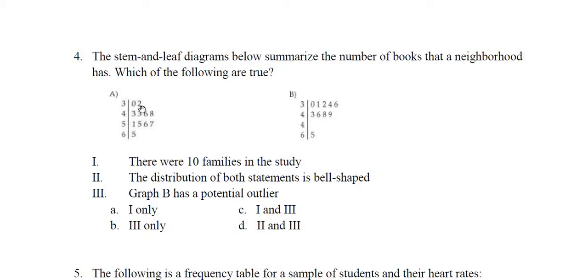Well, let's see, this first stem-and-leaf diagram has 1, 2, 3, 4, 5, 6, 7, 8, 9, 10, 11 entries. And this one has 1, 2, 3, 4, 5, 6, 7, 8, 9, 10 entries. So no, this one has 11. So I'm going to say no, that's not going to be true.